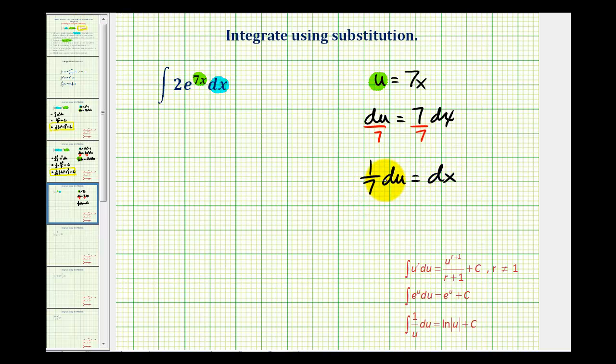So we'll replace dx with 1/7th du and then just leave the coefficient of 2 there. Now we can rewrite this in terms of u.